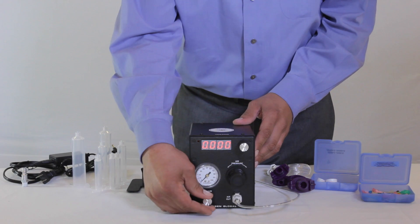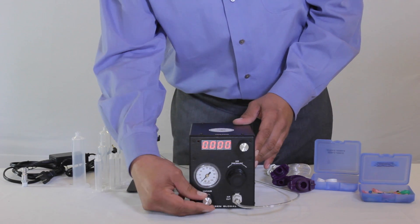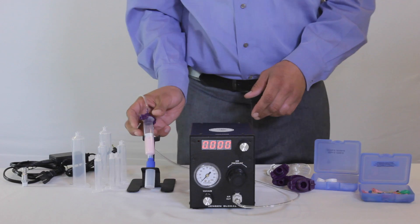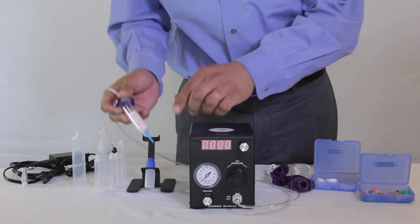This unit also comes with a built-in vacuum feature that allows for finer control over thick materials that tend to wick or ooze after the dispense cycle is stopped.